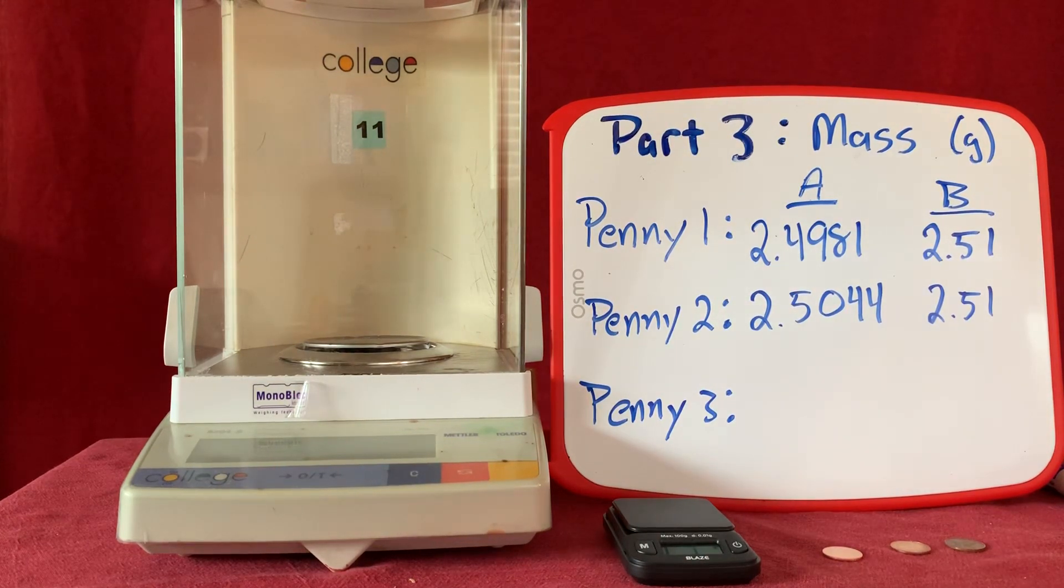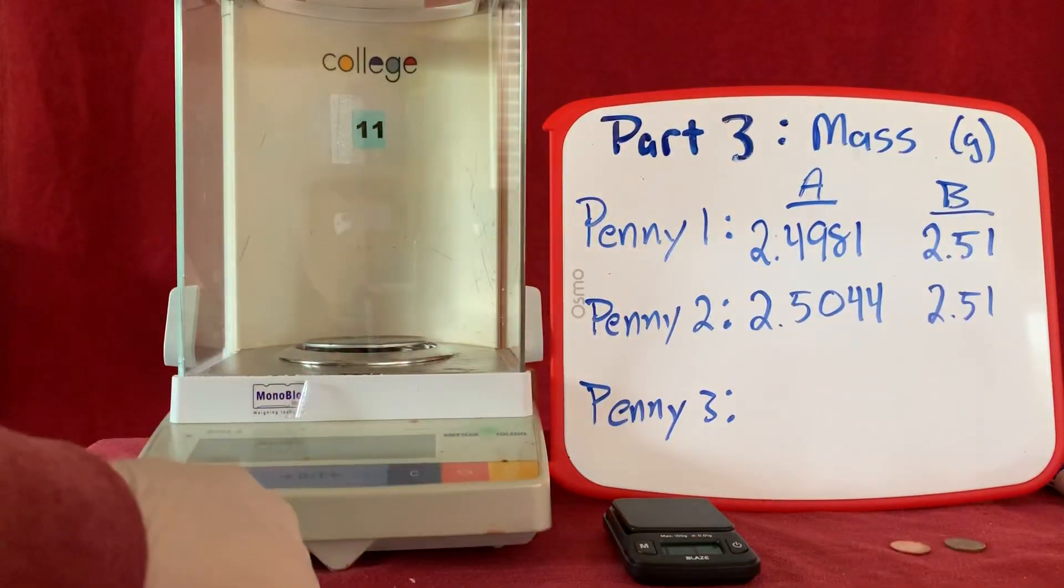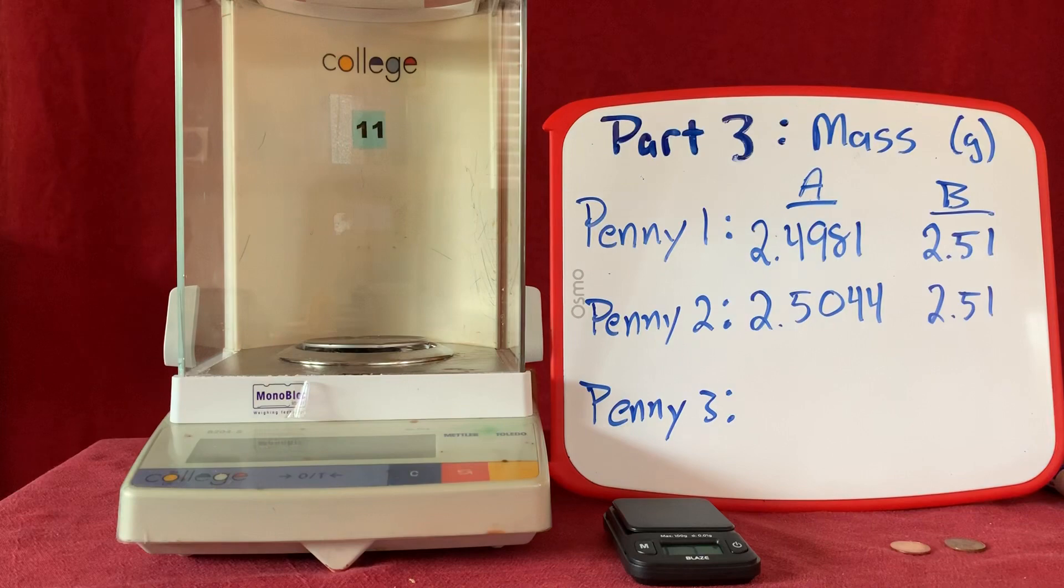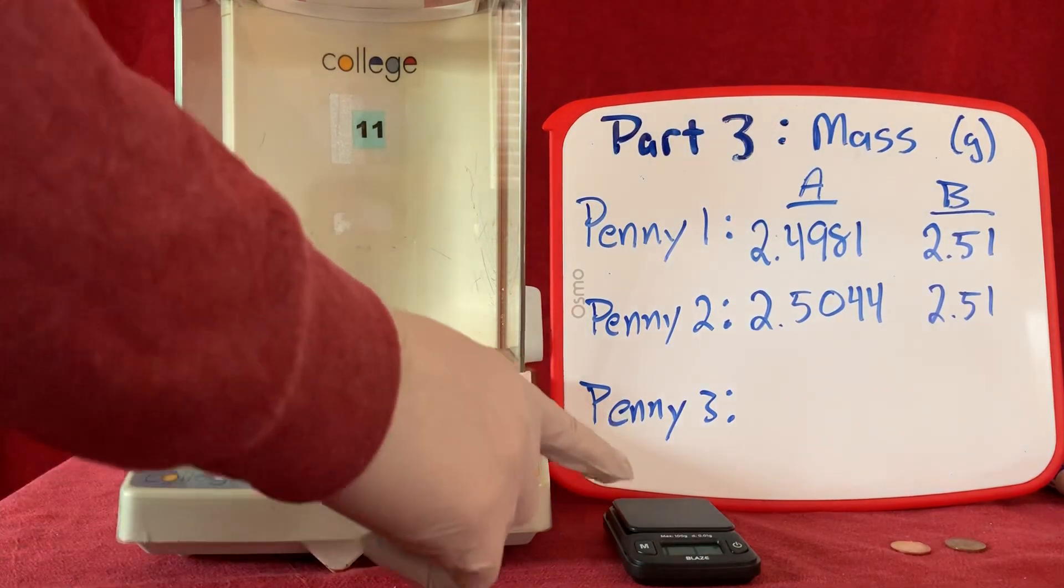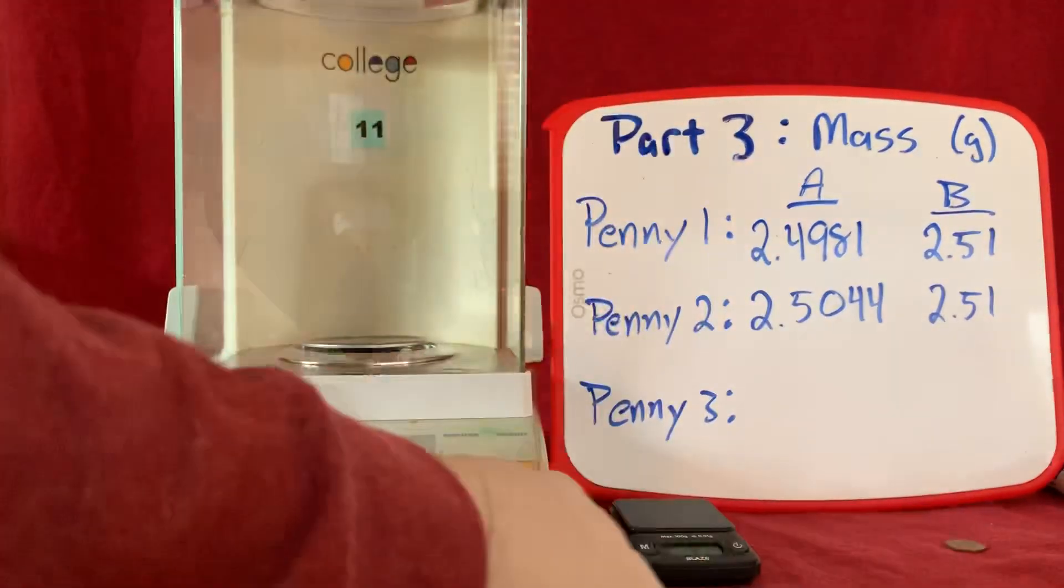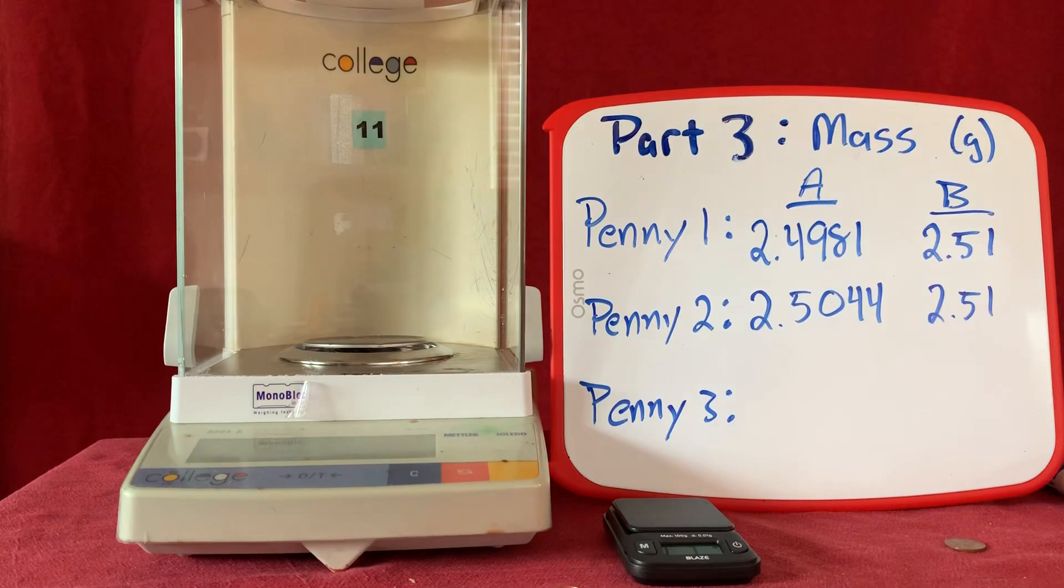Now you can see here I've started by already pre-measuring the masses of penny one and penny two. Penny one, this one right here, which I will move over a little bit, had a mass of 2.4981 when measured on the lab balance and 2.51 when measured on the home balance. Penny two had similar masses of 2.5044 grams and 2.51 grams when measured on the two different balances.